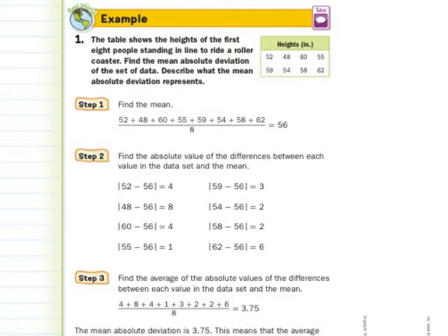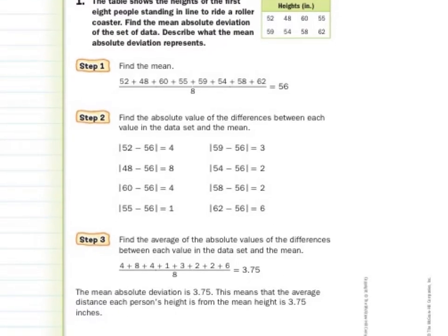Step 3: find the average of the absolute values of the differences between each value in the data set and the mean. We take 4, 8, 4, 1, 3, 2, 2, 6, add them up, and divide by 8 again, and we get 3.75. The mean absolute deviation is 3.75. This means that the average distance each person's height is from the mean is 3.75 inches.